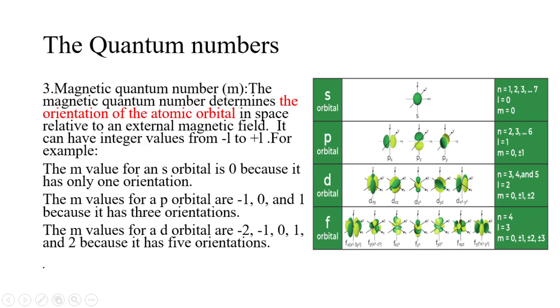Number three: The magnetic quantum number m. The magnetic quantum number determines the orientation of the atomic orbital in space relative to an external magnetic field. It can have integer values from minus L to plus L. For example, the m value for an s orbital is 0 because it has only one orientation. The m values for a p orbital are minus 1, 0, and 1 because it has three orientations. In case of d orbital, the m values are minus 2, minus 1, 0, 1, and 2 because it has five orientations.